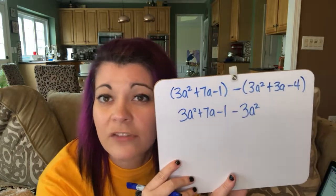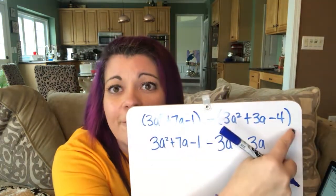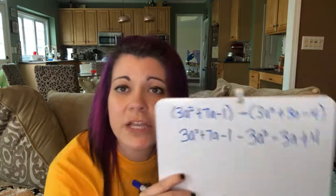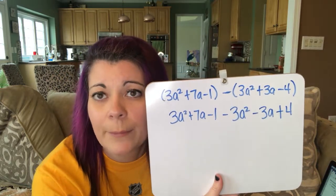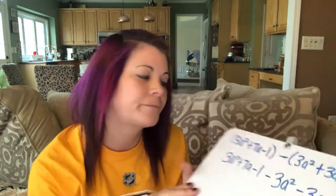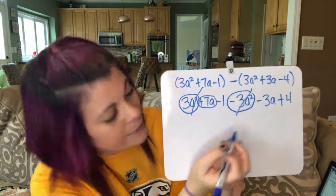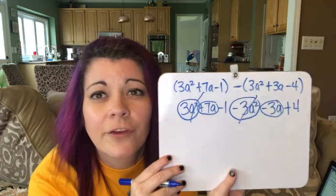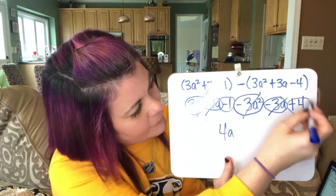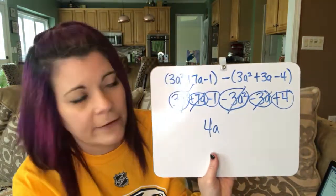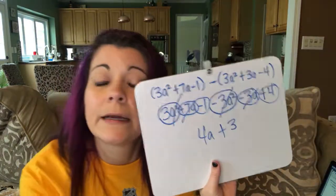So that positive 3a squared becomes a negative 3a squared — so minus 3a squared. That positive 3a becomes a negative — so minus 3a. And then that negative 4 becomes a positive 4 — so plus 4. Now we can combine like terms just like with addition. 3a squared minus 3a squared: 3 minus 3 is 0, so those cancel out. Then plus 7a minus 3a — both have an a — so 7 minus 3 is 4, giving us 4a. And then minus 1 plus 4 — negative 1 plus 4 is a positive 3. So our answer is 4a plus 3.